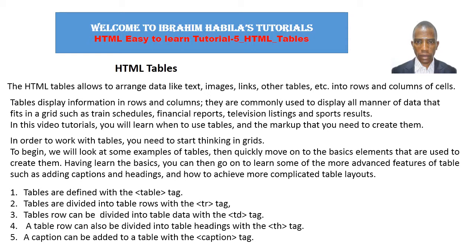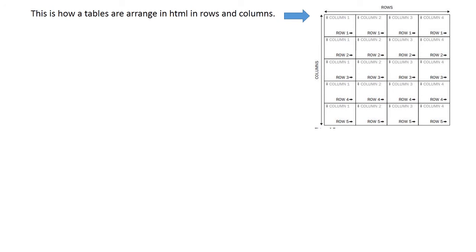To add a table in HTML there are some tags you need. First, tables are defined with the table tag. Tables are divided into table rows with the table row tag. Table rows can be divided into table data with the table data tag. A table row can also be divided into table headings with the table heading tag. This is how a table is arranged in HTML — in rows and columns.